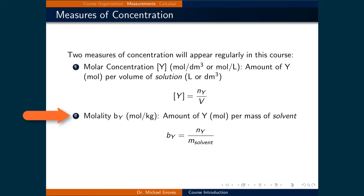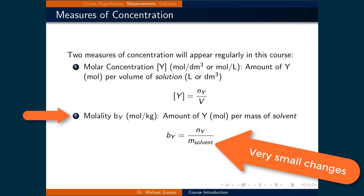Molality is a more constant measure of concentration when there are changes in temperature involved in a process. When the temperature changes, the mass of a substance changes very little. However, the volume of a substance can change dramatically with temperature changes, which will affect the molar concentration much more.